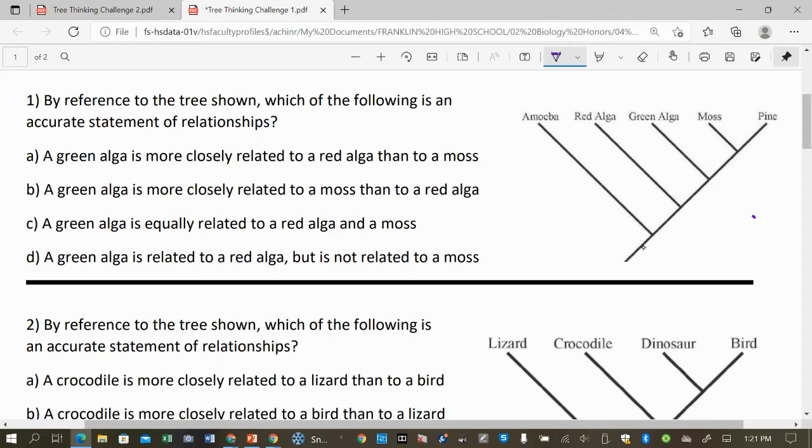So we're looking at this phylogenetic tree and we want to know how the green algae is related to the others. If you look at the green algae here, you need to go back in time to a common ancestor. The first one says it's more closely related to the red algae than to the moss and that's not true, because if you go back in time here's a common ancestor with the green algae and the moss.